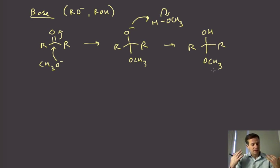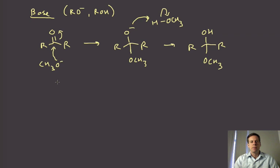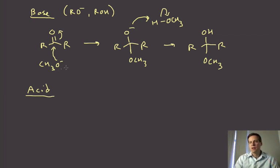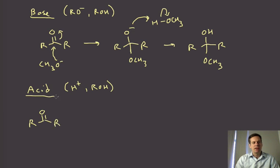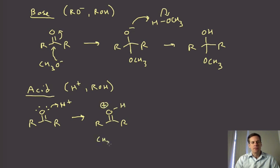The reverse mechanism — going from the hemiketal back to the ketone starting material — should be straightforward; you just push the arrows in the opposite way. For the acid-catalyzed scenario, it's just like we saw with hydrates. We have a proton source and our alcohol of choice — methanol with a tiny drop of HCl would do the job. In the acid-catalyzed regime we do: protonate, add, and deprotonate. We first react the carbonyl with a proton, which gets us to our oxocarbenium ion.